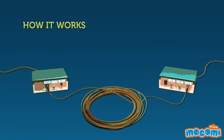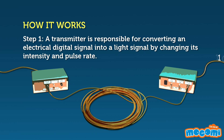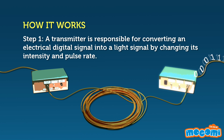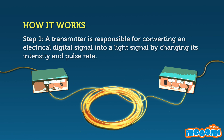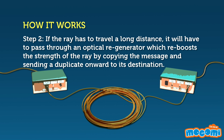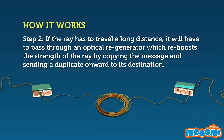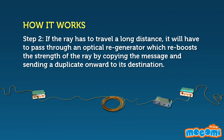How does it work? A transmitter is responsible for converting an electric digital signal into a light signal by changing its intensity and pulse rate. If the ray has to travel a long distance, it will have to pass through an optical regenerator, which reboosts the strength of the ray by copying the message and sending a duplicate onward to its destination.